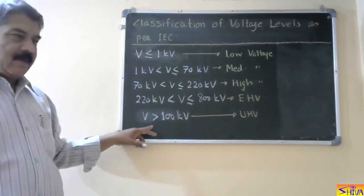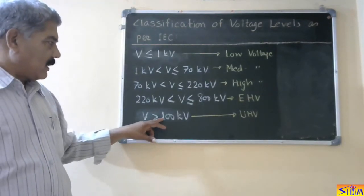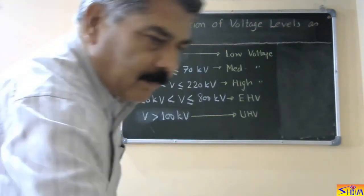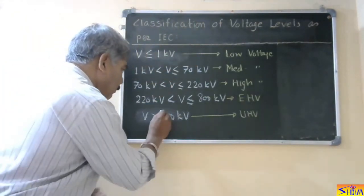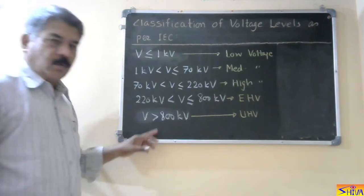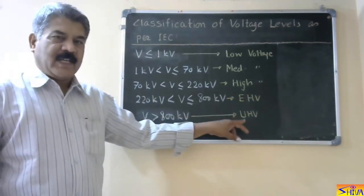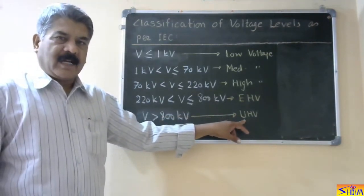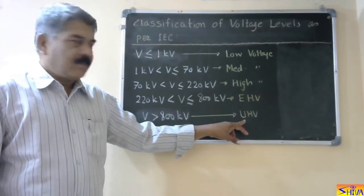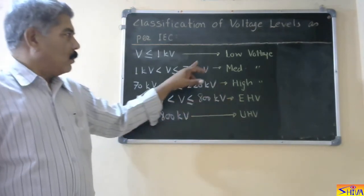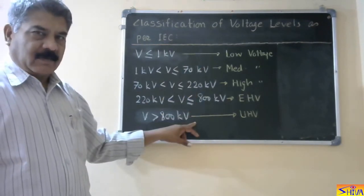If the voltage level is more than 800 kV, it is called UHV — ultra high voltage. So this completes the classification of voltage levels.